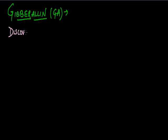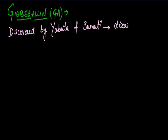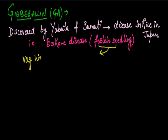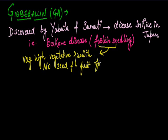First we will talk about discovery. This was discovered by Yabuta and Sumiki. They discussed this gibberellin in a disease in rice in Japan, and the disease is known as bakanae disease or foolish seedling disease. This is called foolish seedling disease because there is very high vegetative growth in the plant. No seed and fruit formation occurs. Only the length of the plant increases.